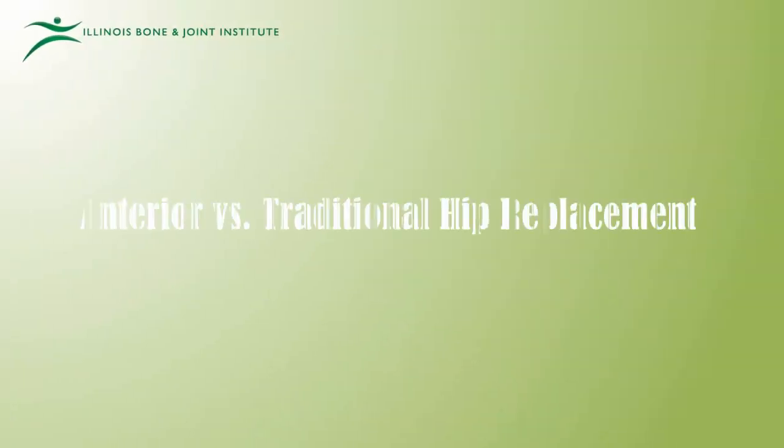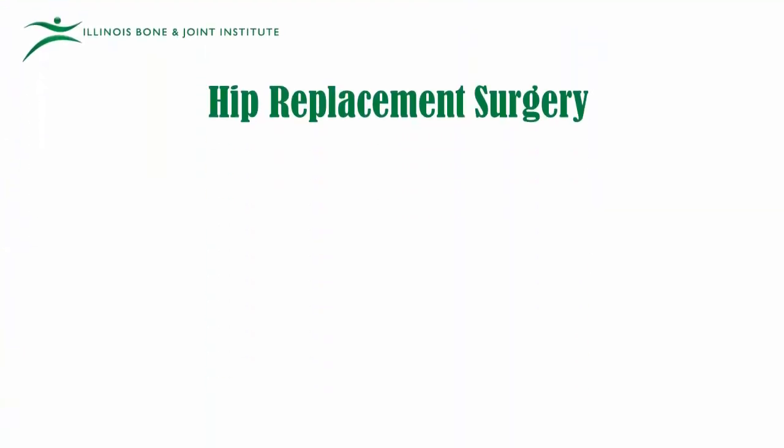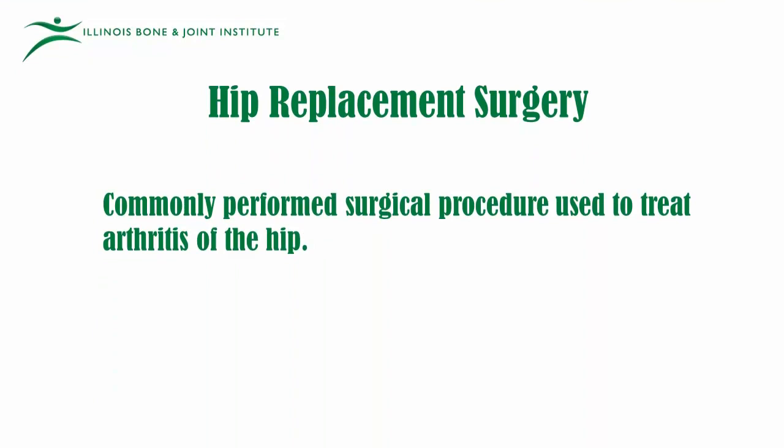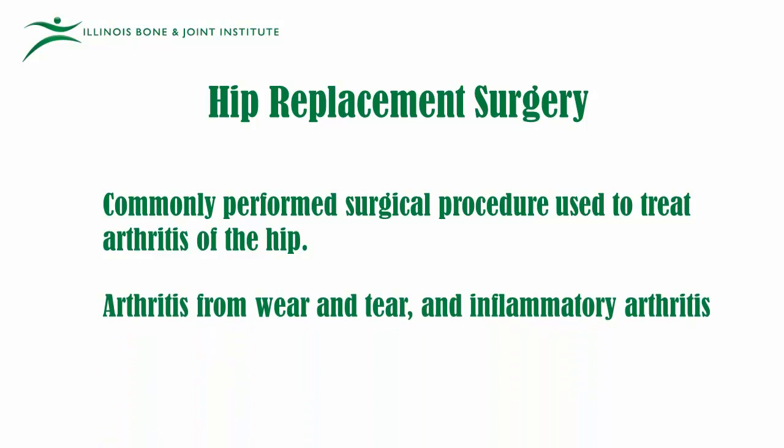In this video you're going to learn about the different types of hip replacement surgery. A total hip replacement surgery is a commonly performed surgical procedure used to treat arthritis of the hip. The types of arthritis that can be treated include arthritis from wear and tear, traumatically induced arthritis, and inflammatory arthritis.